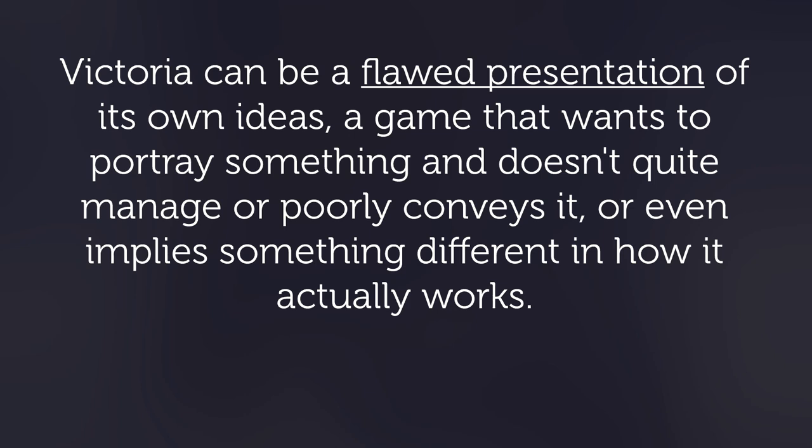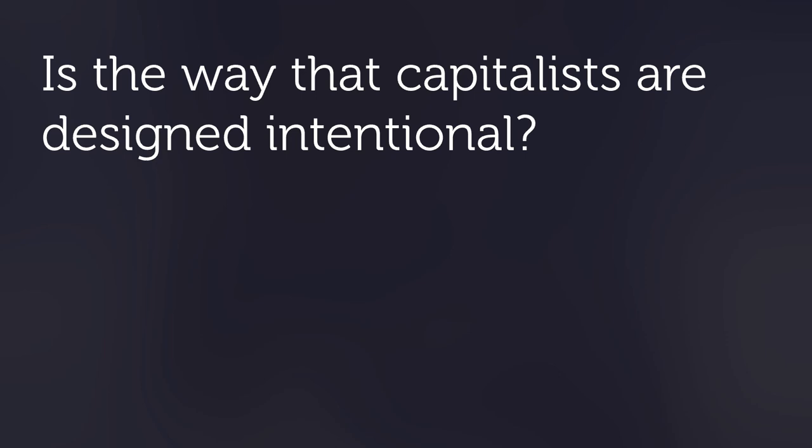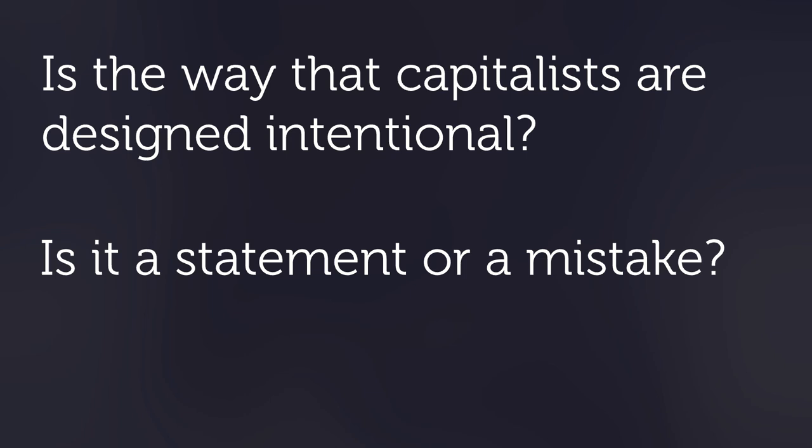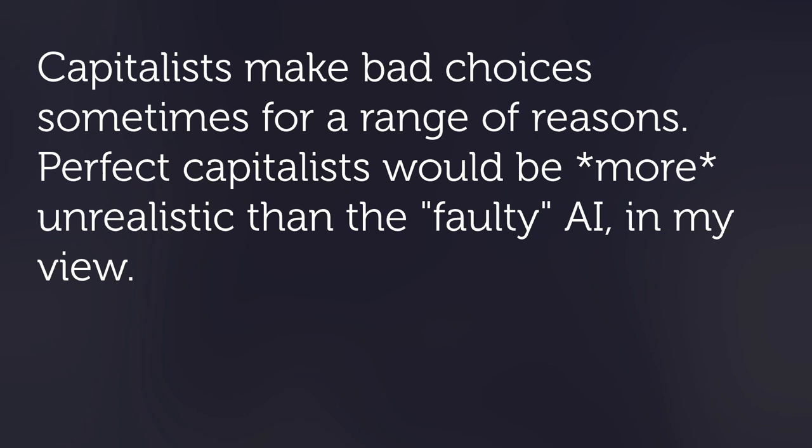Mechanics, bugs, simulations — sometimes it's a bit blurry. Does Paradox intend inaccurate literacy rates? I doubt it. At some point there comes a moment of personal distinction where something must be interpreted as intended or not. Victoria can be a flawed presentation of its own ideas — a game that wants to portray something and doesn't quite manage, or implies something different in how it actually works. With Victoria 2, some players take the game as making a statement on the efficiency of capitalism while others think it's bad AI. Is the way capitalists are designed intentional? Is it a statement or a mistake?